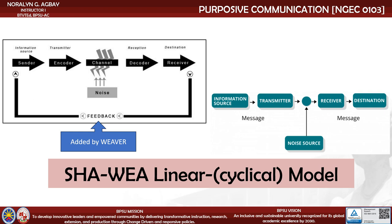The Shannon-Weaver model of communication refined Lasswell's model in 1949, where the element of noise is one of its distinct features. It is the first model that explains that interruptions in every communication may occur — termed as noise. Looking at its origin, the element of noise initially referred to interference of airwaves that results in choppy messages when using communication technology.